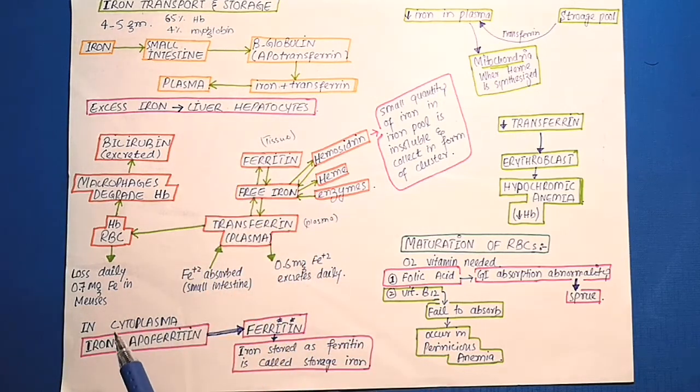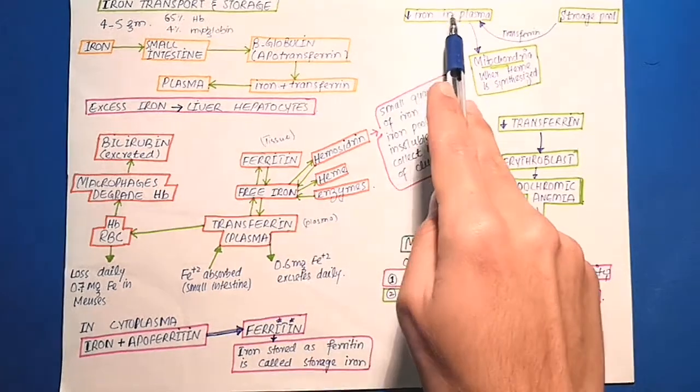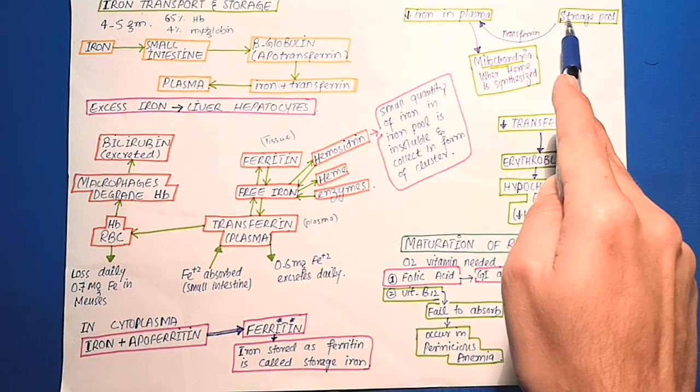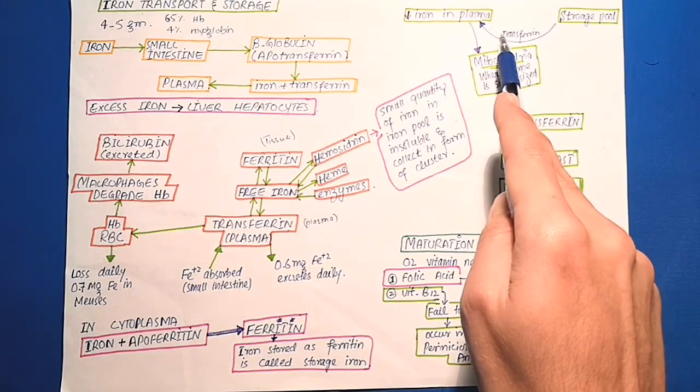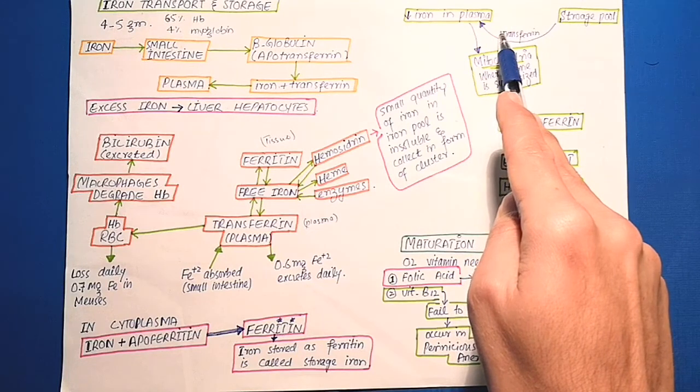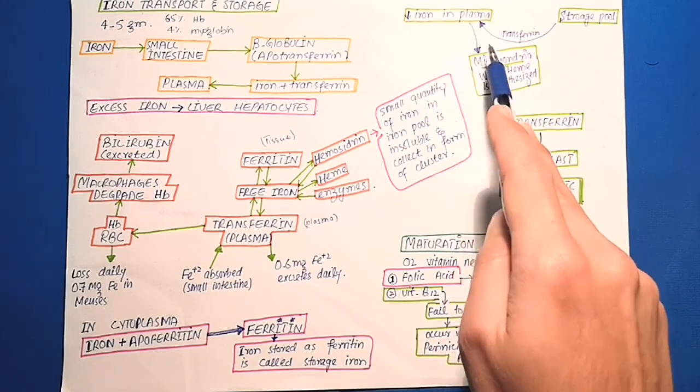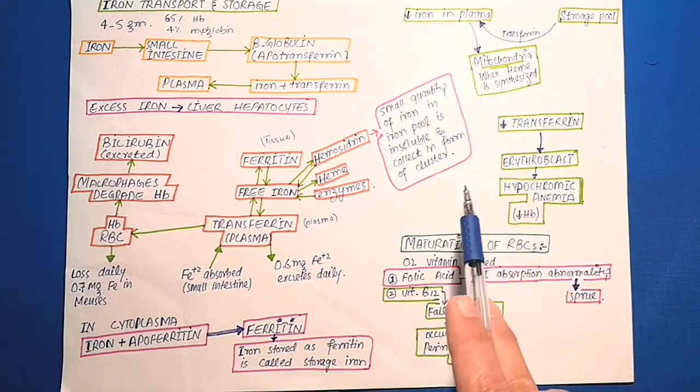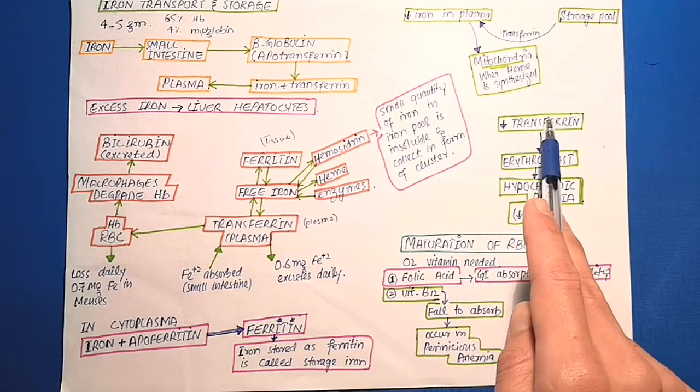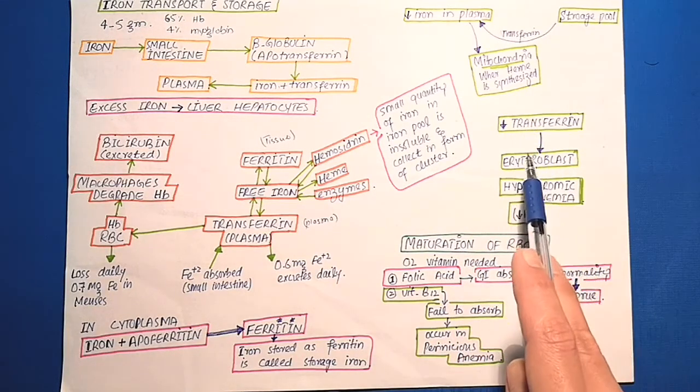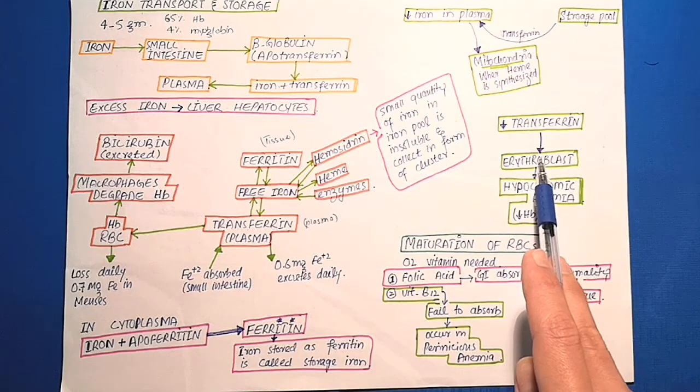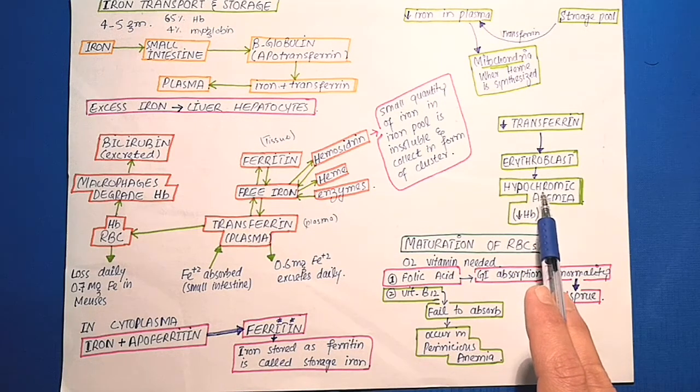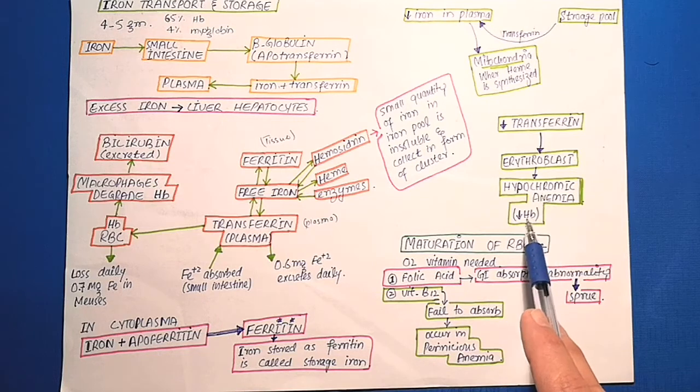When the quantity of iron in the plasma falls low, some of the iron in the ferritin storage pool is removed and transported in form of transferrin in the plasma to the body where it needs it, mainly to the mitochondria where heme is synthesized. If a person does not have adequate amounts of transferrin in the blood, there is a failure to transport iron to the erythroblast and it is called hypochromic anemia, where RBCs contain less hemoglobin than normal.